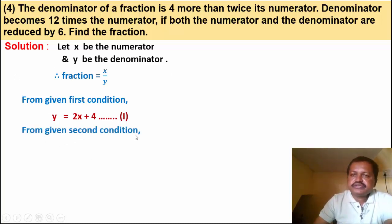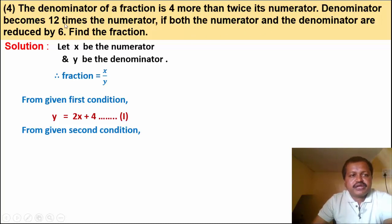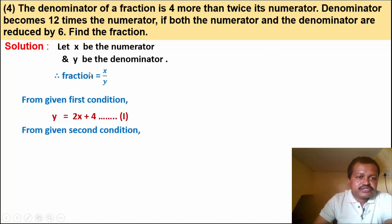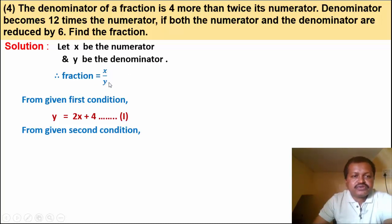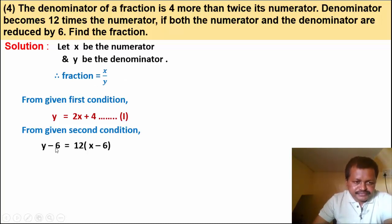From the second condition: the denominator becomes 12 times the numerator when both are reduced by 6. So the new numerator is x minus 6 and new denominator is y minus 6. The relation is: y minus 6 is equal to 12 times (x minus 6).